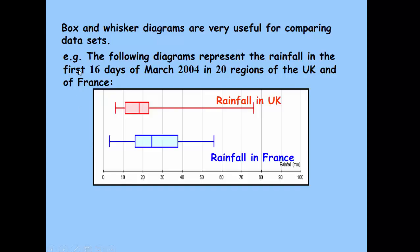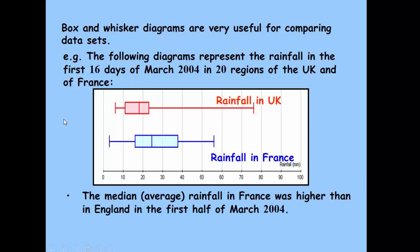As I suggested before, they're really useful in comparing data sets. We're comparing rainfall in UK with France here. You can see here, 16 days of March, 20 regions of UK and France. We use the median to compare where it rains most or least, so we would comment that there's more rainfall in France because the median is higher.